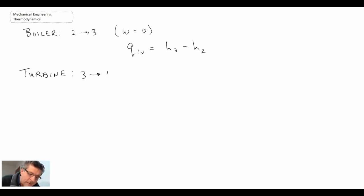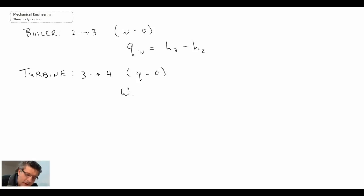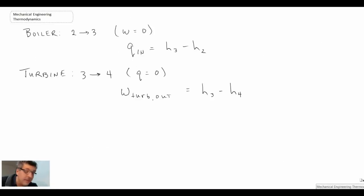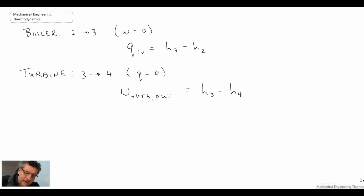In the turbine, we're going from state three to state four. Just like in the pump, we assume there is no heat transfer. The only thing going on in the turbine is work output, and we quantify that as the change in enthalpy of the fluid through the turbine — specifically h3 minus h4. We can get those enthalpy values from the superheated steam tables. If we end in the two-phase region, we use the two-phase properties to get the enthalpy at state four.